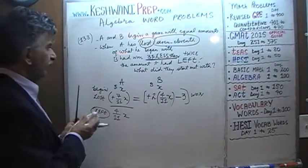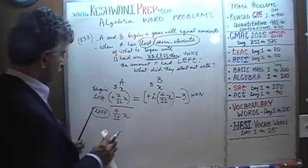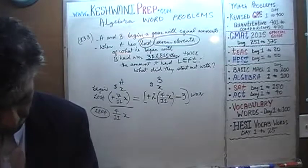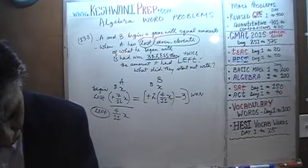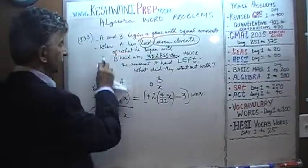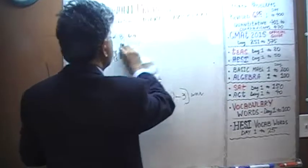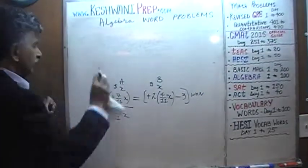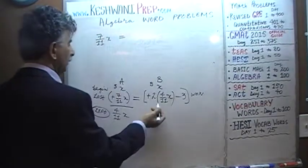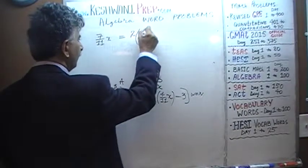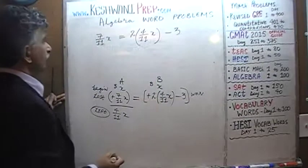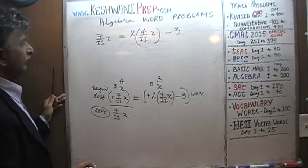Let's solve this equation together — we'll work it out up top where it's easier. The equation we have is: 7/11x equals 2 times 4/11x minus 3.